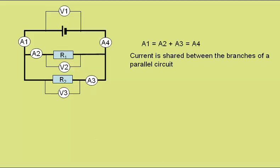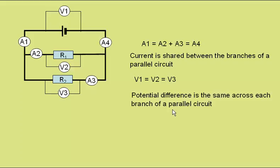Kirchhoff's second law tells us that the EMF across the power supply here, read by voltmeter 1, must be equal to the potential differences if we go around this loop — that is, V2 — or if we go around this loop, being V3. So the EMF, V1, must be equal to the potential difference V2, and also equal to the potential difference V3. From Kirchhoff's second law, we have that V1 is equal to V2 and equal to V3. The potential difference is the same across each branch of a parallel circuit, and that is equal to the EMF of the supply.